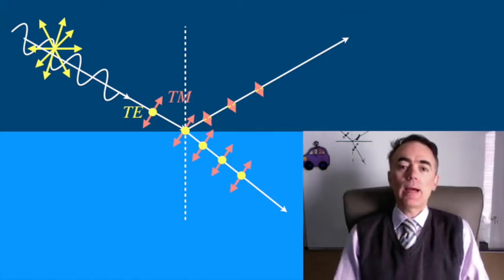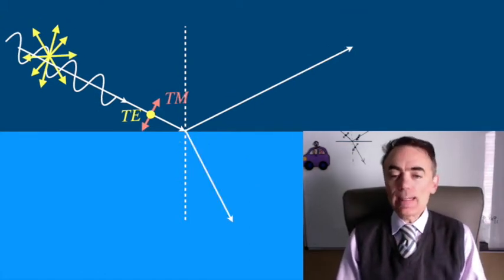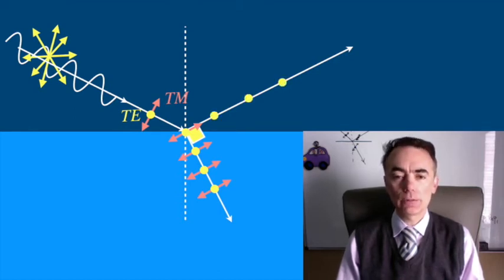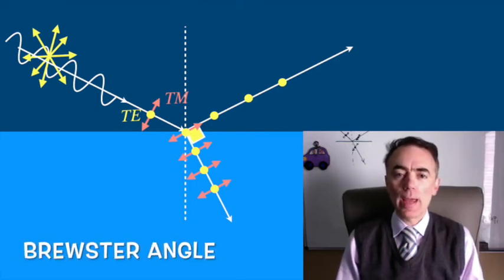When reflected and refracted beams are at 90 degrees, the TM oscillation will be in the direction of propagation of the reflected light so that reflected light will be totally polarized in the TE direction. To this angle, we call it the Brewster angle.